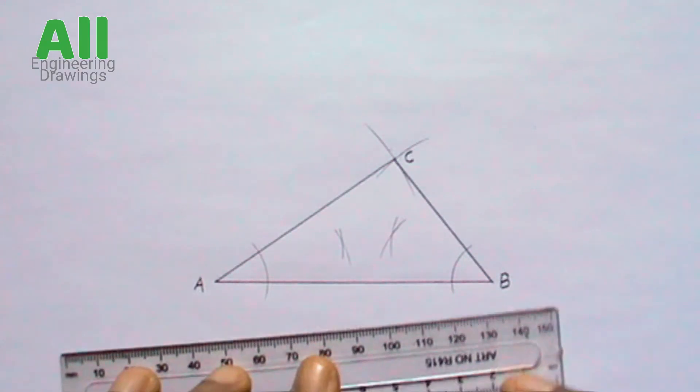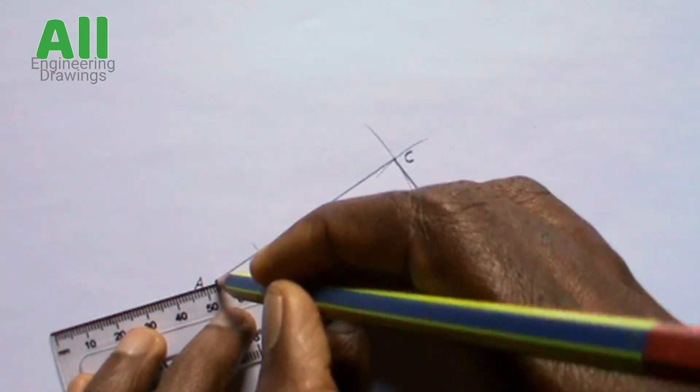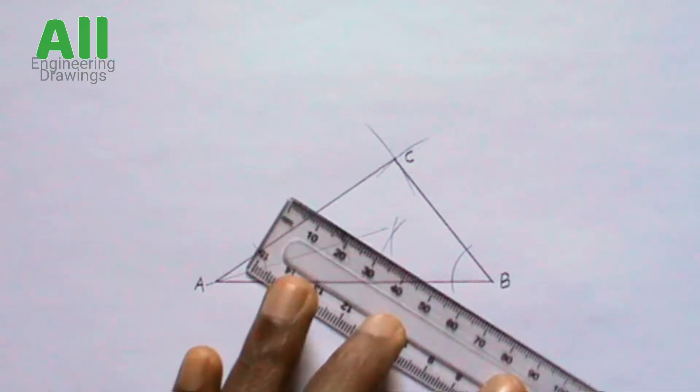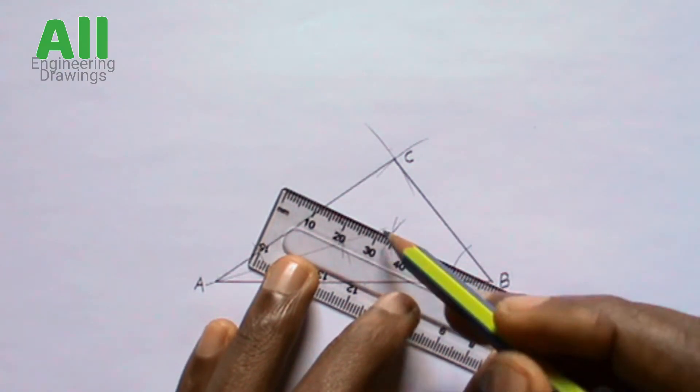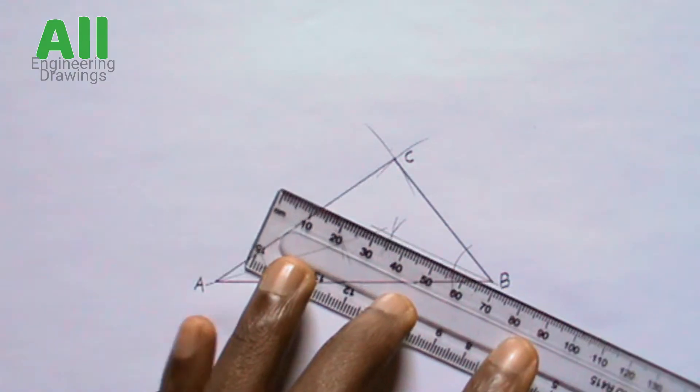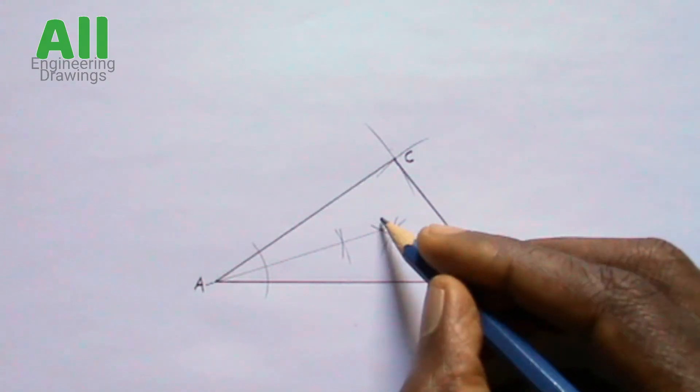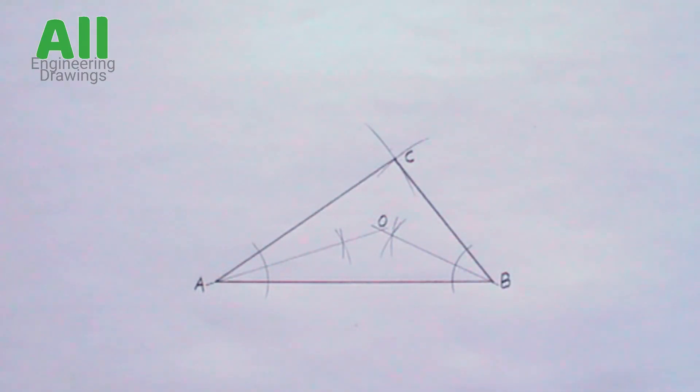Now, produce the bisectors to meet at a point. Label the point where the bisectors intersect O. Point O is the center of the circle you are about to inscribe.